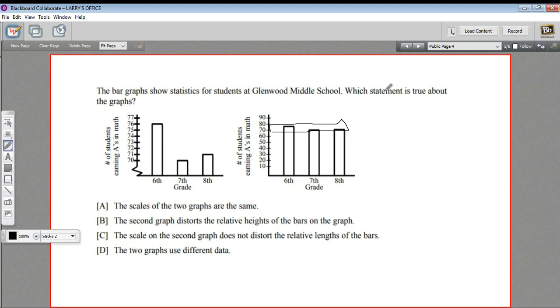So let's see if we can find the true statement about these two graphs. A says the scales of the two graphs are the same. Well, that's not true—this one goes in tens, this one goes in ones, so they do not have the same scales. The second graph distorts the relative heights of the bars on the graph. Well, the second graph really shows the true heights of the bars; it's this one that distorts them.